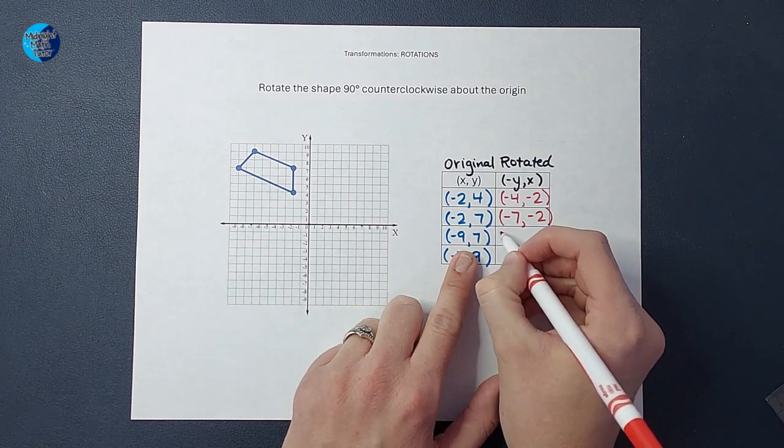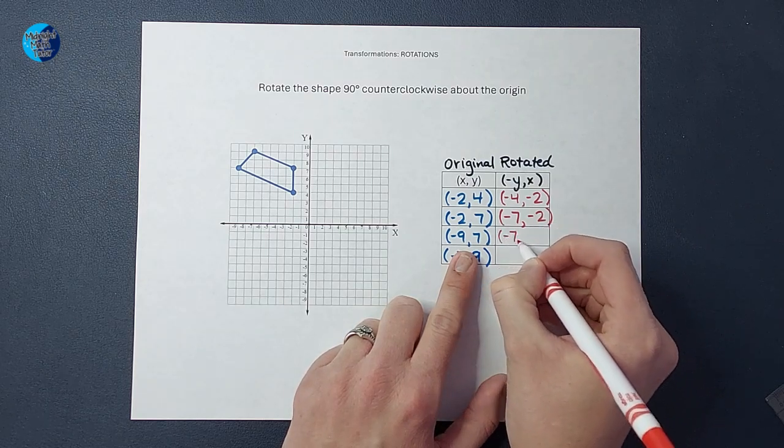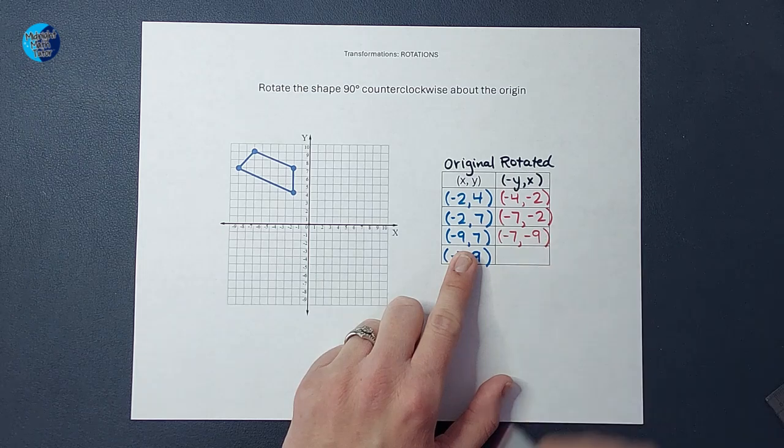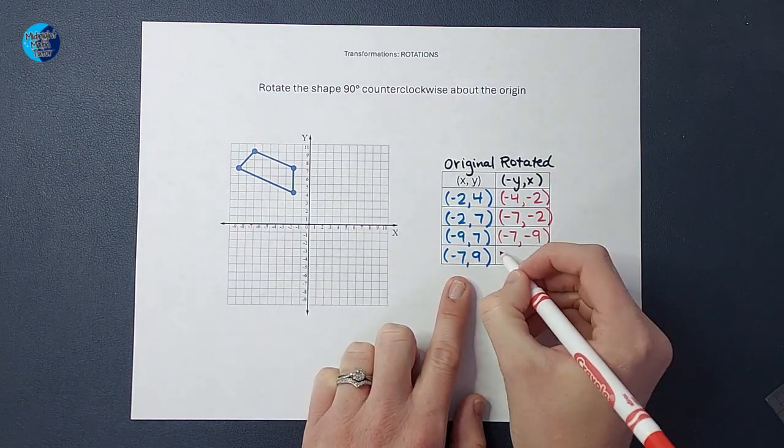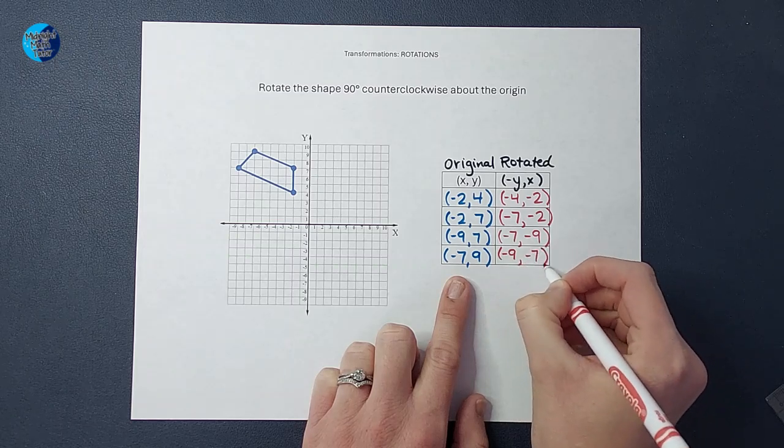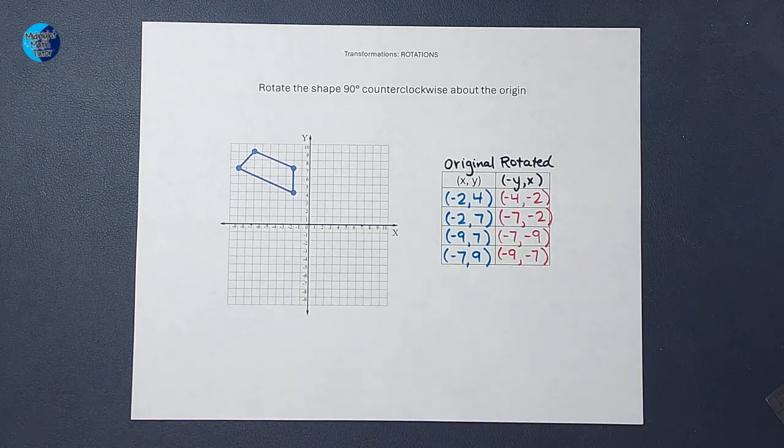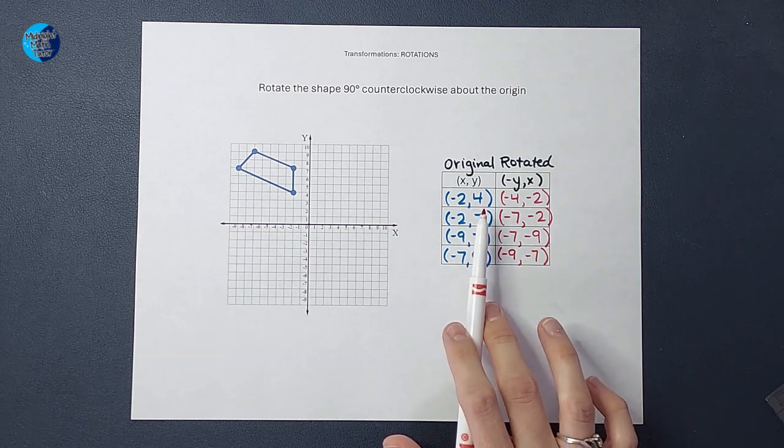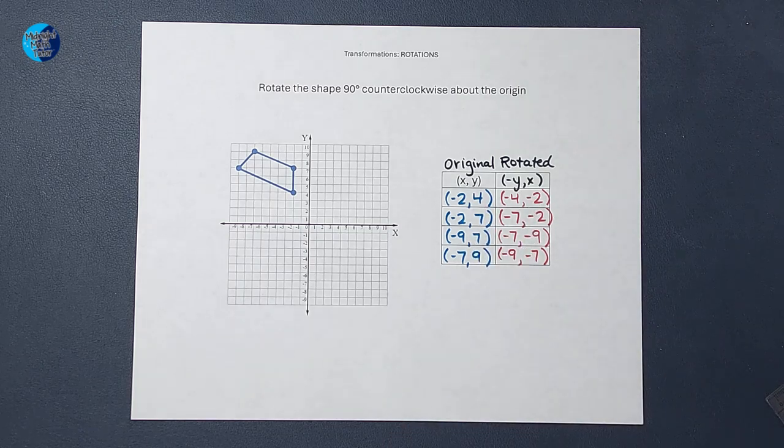All right, again, write y first, change its sign, and then write x second. Write y first, change its sign, and write x second. So as you're doing these, if y were negative, we change its sign and make it positive.